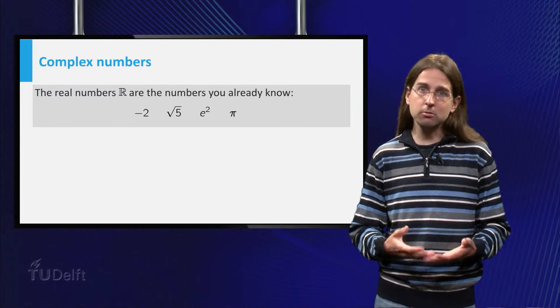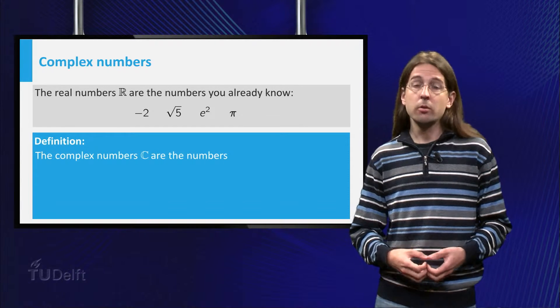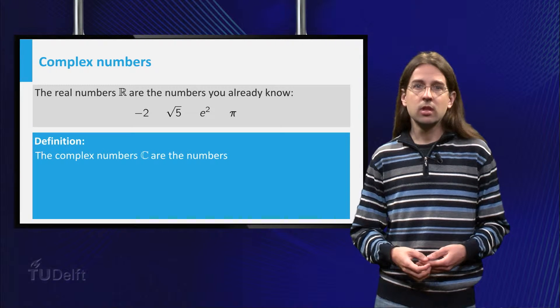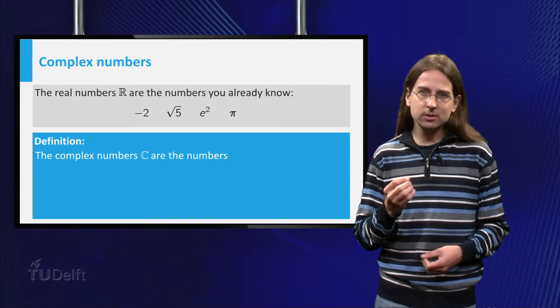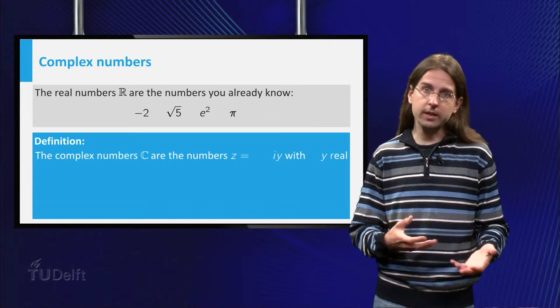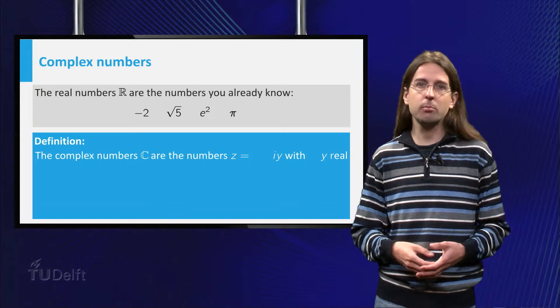Let us see what a general complex number looks like. We want to be able to add, multiply, etc. complex numbers. So we do not just want to consider the number i, but also multiples of i, say i times y for some real number y.